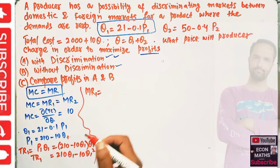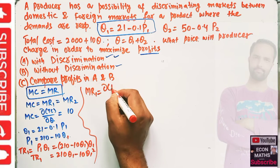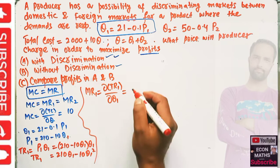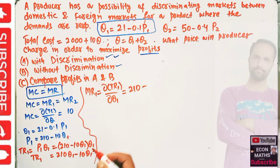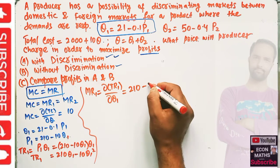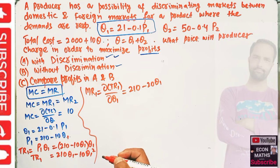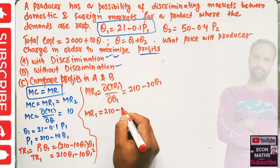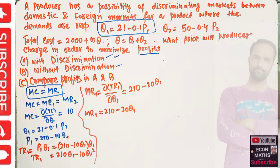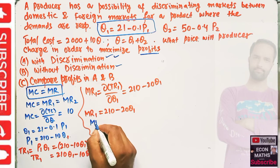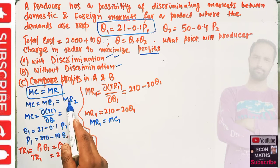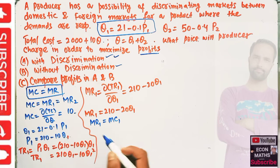Marginal revenue in the first market is the derivative of total revenue with respect to Q1. Taking the derivative: derivative of 210Q1 is 210, and derivative of 10Q1² is 20Q1. So MR1 = 210 - 20Q1. The profit-maximizing condition requires MR1 = MC.